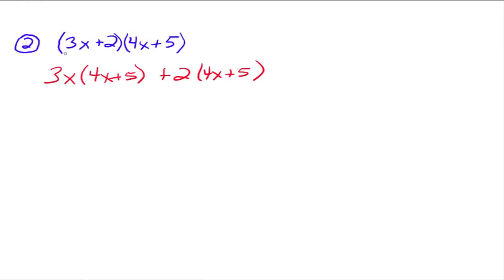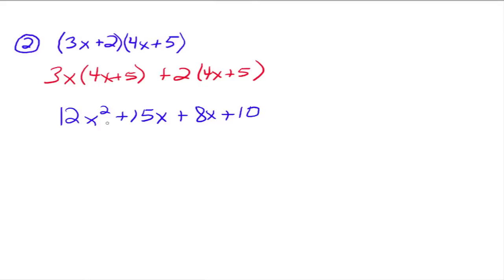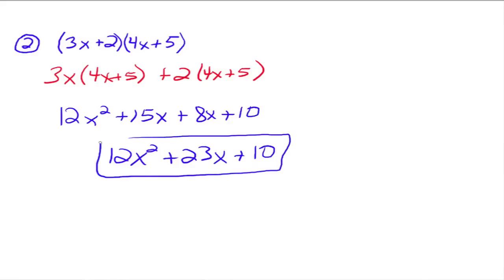We're literally taking 4x plus 5 and distributing it through to be multiplied by the 3x and then by the 2. Then we simplify: 3x times (4x plus 5) gives us 12x squared plus 15x, and 2 times (4x plus 5) gives us plus 8x plus 10. We notice that 15x and 8x can be combined as like terms, giving us 12x squared plus 23x plus 10. That is our result from multiplying these two binomials.